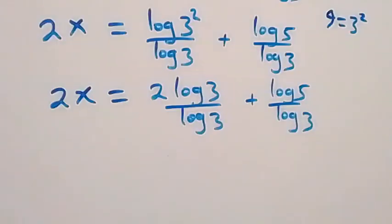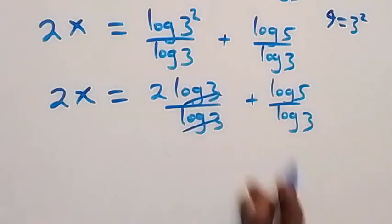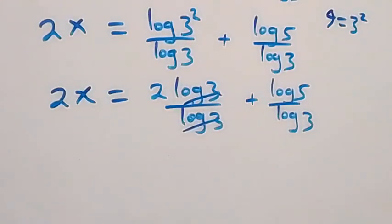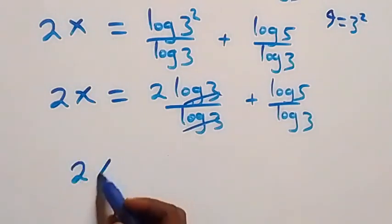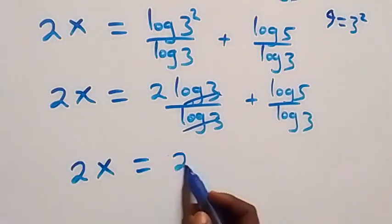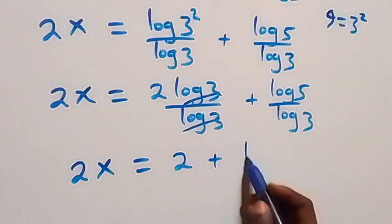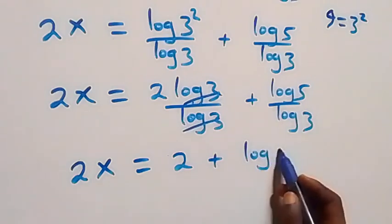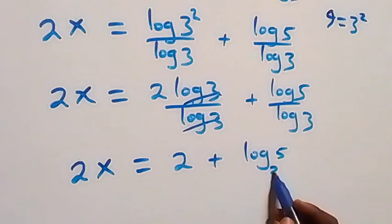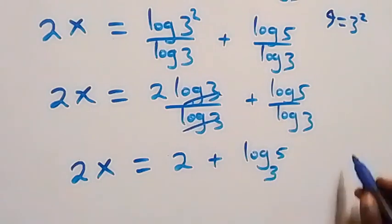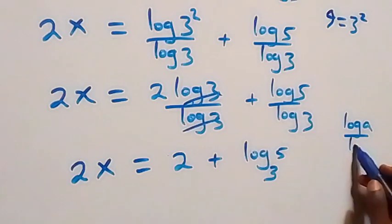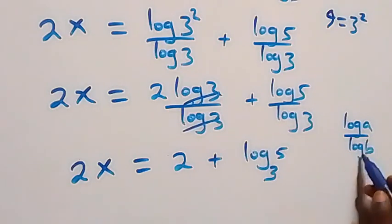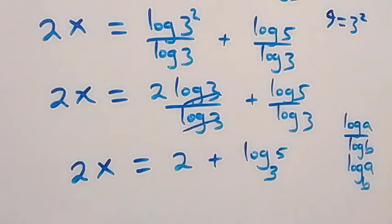Log 3 squared over log 3 simplifies: log 3 cancels and we have 2 left, so 2x equals 2 plus log 5 over log 3. By the change of base rule — where log a over log b equals log a to base b — this becomes 2x equals 2 plus log 5 base 3.